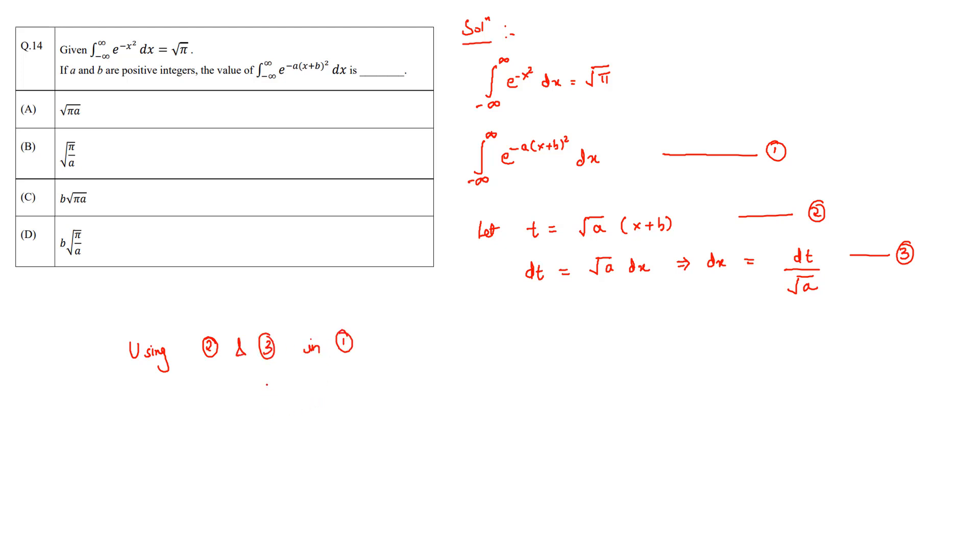We simplify our integration minus infinity to infinity. Now this becomes e raised to the power minus t squared, and in place of dx we write dt over root of a.